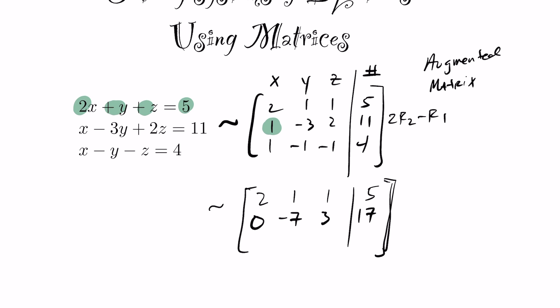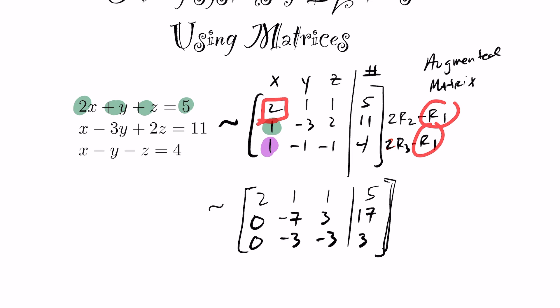Now I want to make the entry in row 3, column 1 equal to zero. I'll do 2 times row 3 minus row 1, which gives 0, -3, -3, 3. You might ask why not do row 3 minus row 2 — you could, but the general idea is to always reference row 1 as your anchor when eliminating in the first column. When moving to the second column, you reference row 2. It's a procedure — not wrong to do otherwise, just be careful.